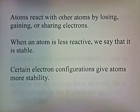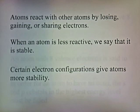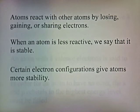Atoms react with other atoms by losing, gaining, or sharing electrons. When an atom is less reactive, we say that it's stable. Certain electron configurations give atoms more stability.